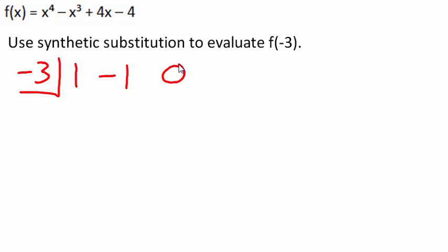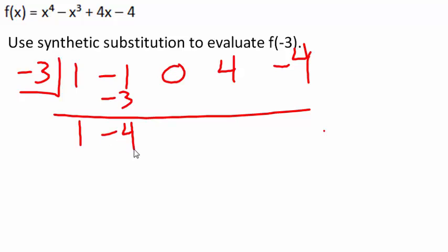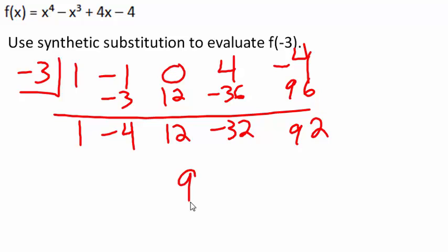We'll use the same coefficients that we used on the first two parts of the problem. And all we're going to be interested in here is the remainder. So we carry through the synthetic substitution. We get a pretty big number here. Looks like 92. 92 is what you would get when you plug negative 3 into this function.